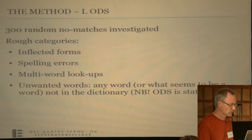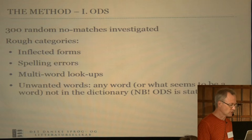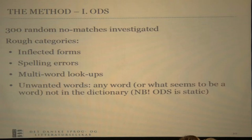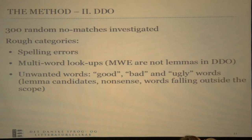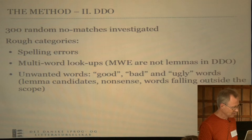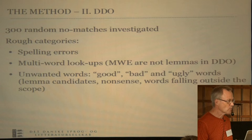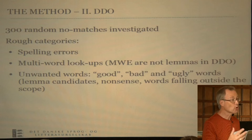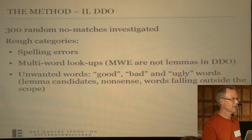For the investigation itself, we took about 300 random no-matches and manually registered various types. For the historical dictionary we found several types, but we were mainly interested in the unwanted words. For the modern DDO, inflectional forms don't appear in this list as they are taken care of by the full-form list, and multi-word expressions are not relevant as they are not headwords in our dictionary. There are also good words that could be included, but it is sensible to direct them to other sources if available there.